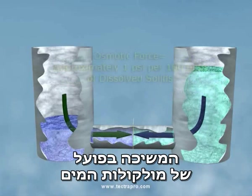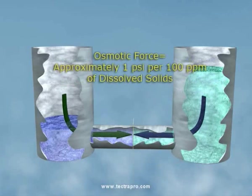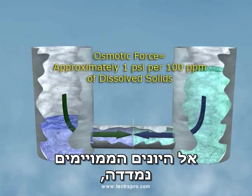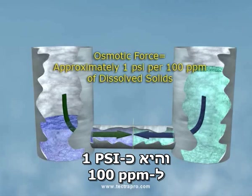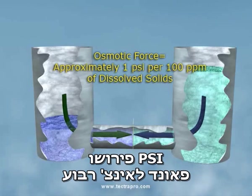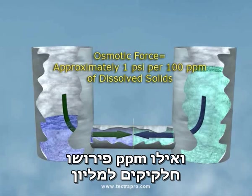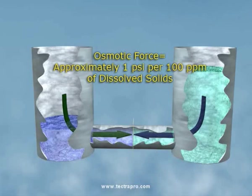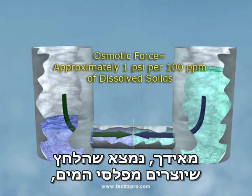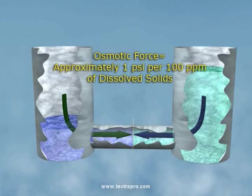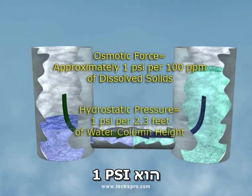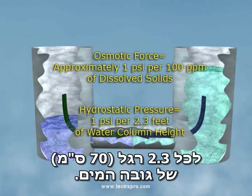The actual attraction of water molecules to the hydrated ions has been measured to be about 1 PSI per 100 ppm. PSI refers to pounds per square inch, and ppm refers to parts per million. On the other hand, pressure exerted by water levels, known as hydrostatic head, has been determined to be 1 PSI for every 2.3 feet of water height.